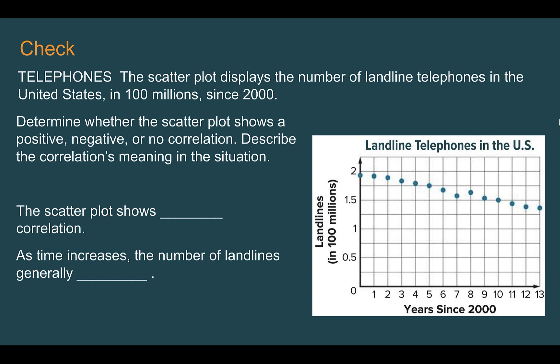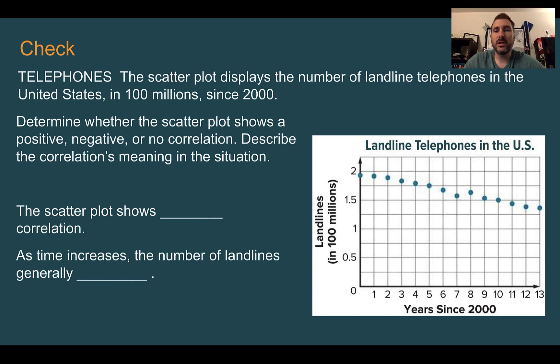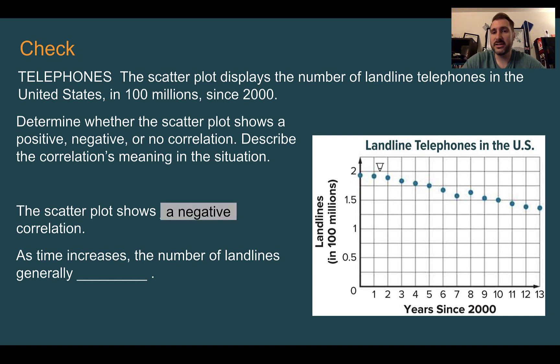Check your understanding: read through the situation and use the graph. Determine what type of correlation this shows and what it would mean in context. Here we're looking at the years and the number of landlines — telephones that you had to have plugged into the wall. This is a negative correlation; we can see it's going in a downward direction. So as time increases, the number of landlines was decreasing.